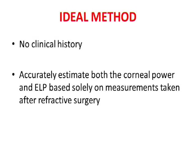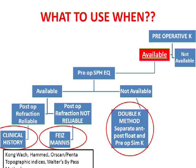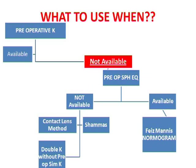Here is a simplified decision nomogram for what to use when. If you have preoperative K values, look at what refraction data you have: if you have refraction, use the clinical history method; if post-surgery refraction is unavailable, use the Feiz-Mannis method because it uses IOL power directly; if you have no preoperative refraction, use the double K method. In the second situation — no preoperative K values — if you also don't have refraction, use the contact lens or Shammas method; if you do have refraction, use the Feiz-Mannis method. Make the most use of whatever data you have and feed it into the appropriate formula.